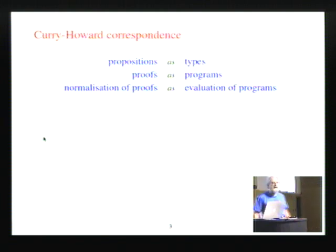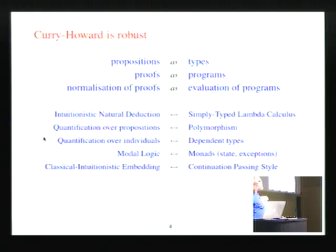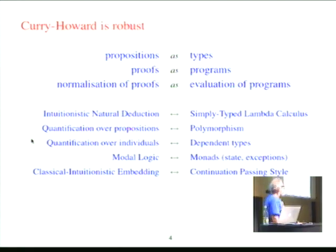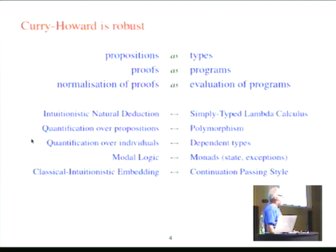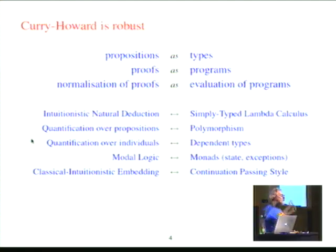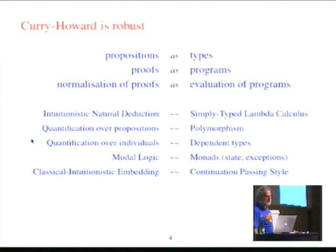And it's very nice that Gentzen, in 1933, formulates intuitionistic natural deduction. Just a little later, Church formulates lambda calculus, and then simply typed lambda calculus. And all you need to do is wait 50 years. And Howard publishes the paper and says, look, these are exactly the same thing. And one can see that they are exactly the same thing. And it's a very robust correspondence.